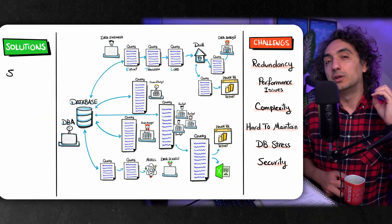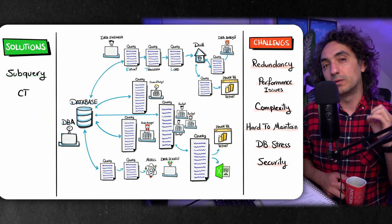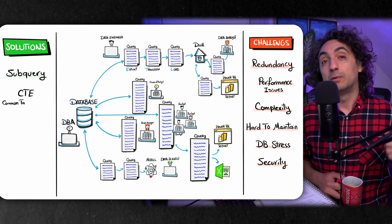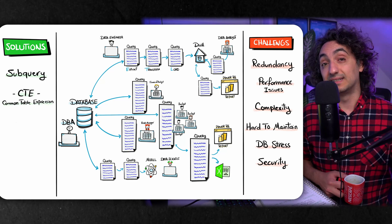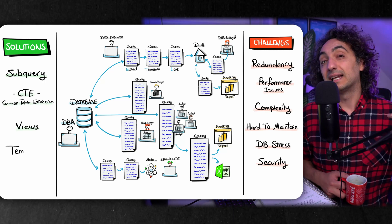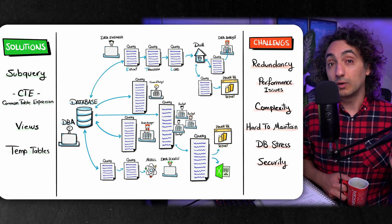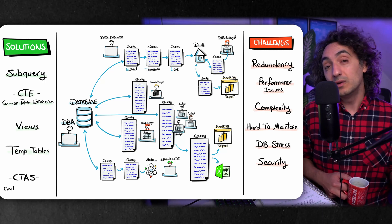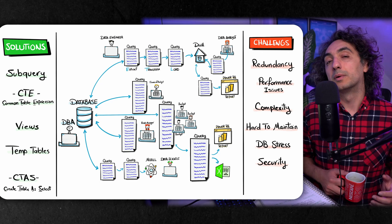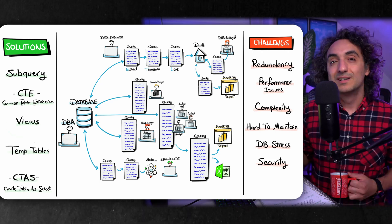We have learned five amazing techniques in order to solve those problems: subqueries, CTEs, and also how to create objects like views, CTAS, and temporary tables. Now we're going to compare them side by side in order to have a big picture about the advantages and disadvantages of each method.